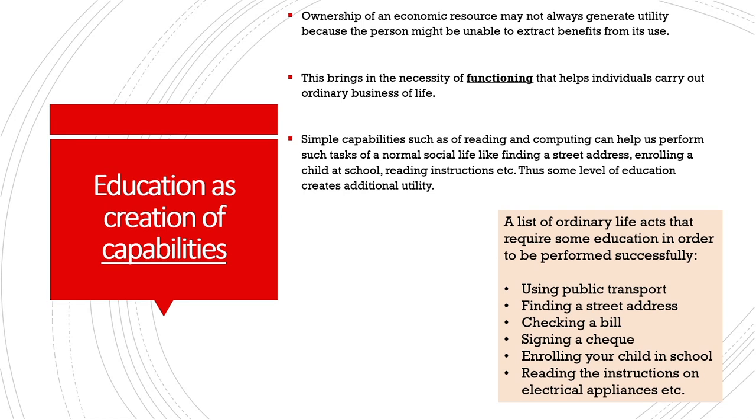Sen has advanced the idea that ownership of an economic resource may not always generate utility, because the person owning these resources may not be able to extract benefits if they are unable to process the required information. The most famous example Sen uses is the idea of a bicycle. I may possess a bicycle, but may not be able to utilize it because I am differently abled, or I may not possess the knowledge to utilize it. So while I may be resource rich, my inability to translate that resource into functioning may not provide the utility I desire.